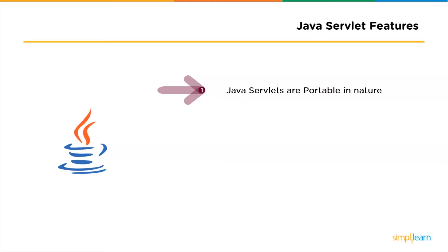For example, you can create a servlet on a Windows operating system using GlassFish as a web server, and then later run it on any operating system like Unix, Linux with an Apache Tomcat web server. This feature makes servlets portable, and this is the main advantage of servlet over CGI. We shall discuss the differences of CGI versus servlet in the next section.